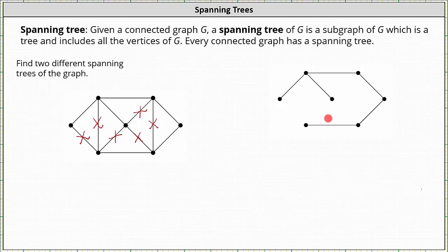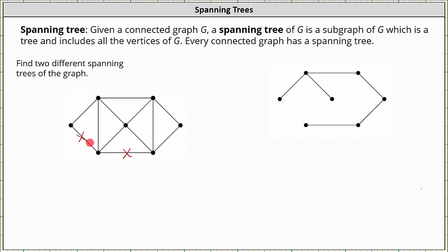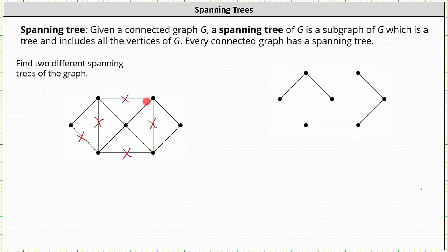This is one possible spanning tree because the graph contains all the original vertices and there are no cycles. Now let's work on determining a different spanning tree for the same original graph. Notice in the first spanning tree we didn't remove this bottom edge. Let's start by removing this edge in the graph. From here, whatever we do, we are going to have a different spanning tree. Let's remove this edge to remove the cycle among these three vertices, then remove this edge to break the cycle among these three vertices, and remove this top edge so we no longer have a cycle among these three vertices. Let's remove this edge here so we no longer have a cycle among these three vertices.